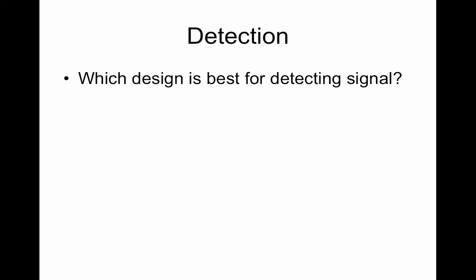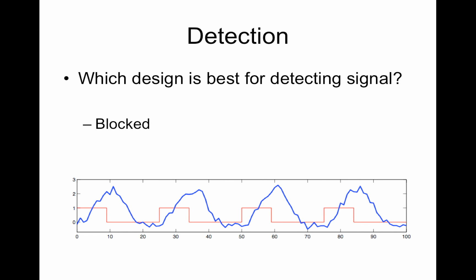Now detection. We just want to know is the signal there. Which design is best for detecting signal? Well it would be the block design. Look how - I believe this is bad. I should know it. I think this is real data. But no this is not real data. But the point is if you have a block of stimuli you get this really strong response.